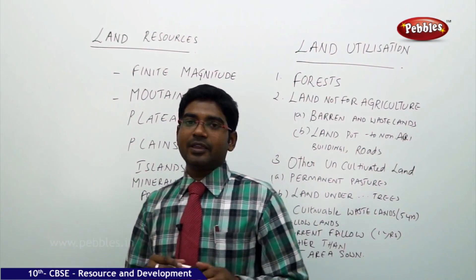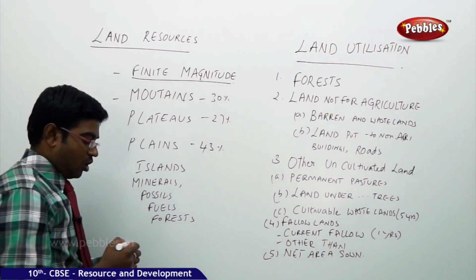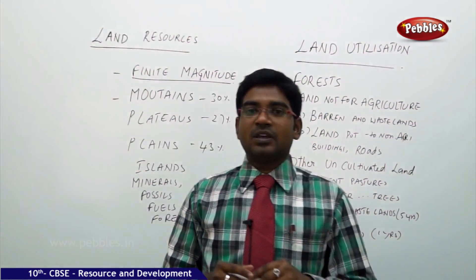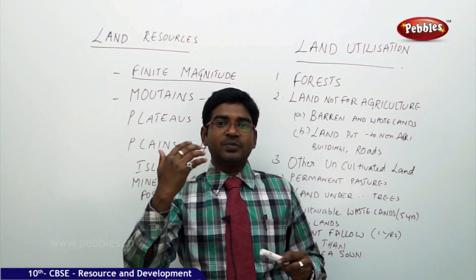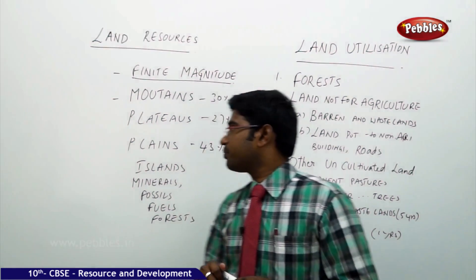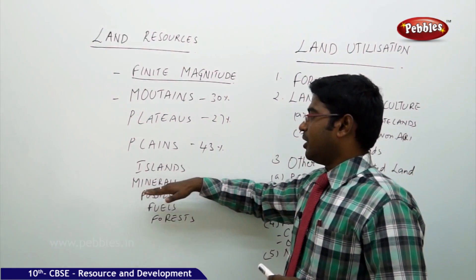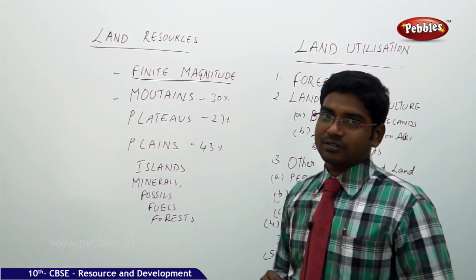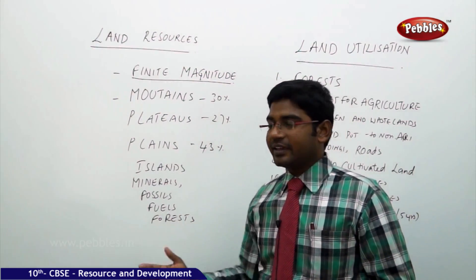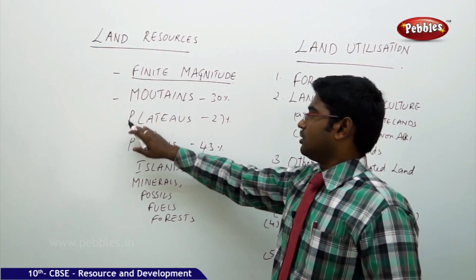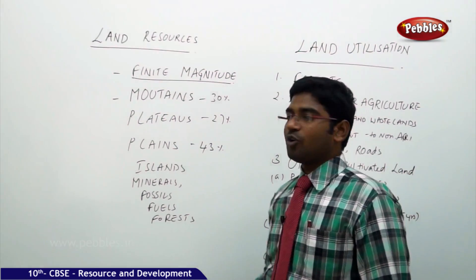That is the reason why land is known as a finite magnitude — a limited place. In this limited place, the entire land has been re-categorized into mountains, plateaus, plains, islands, minerals, fossils, fuels, and forests. So the entire magnitude of the land has been broadly categorized into mountains, plateaus, plains, islands, minerals, and forest lands.